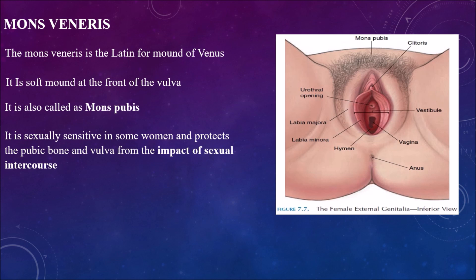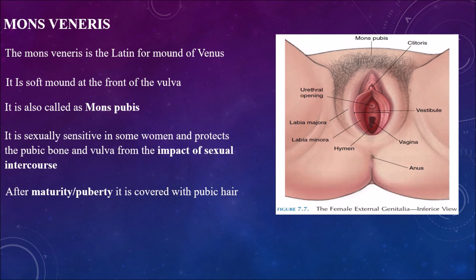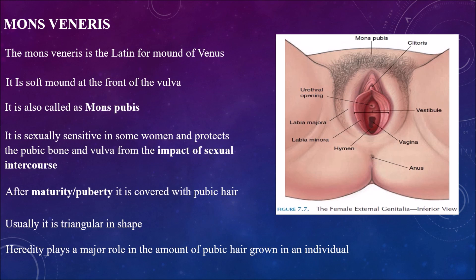The mons pubis is sexually sensitive in some women and protects the pubic bone and vulva from the impact of sexual intercourse. After puberty — around age 11 to 12 — it is covered with pubic hair. Its shape is mostly triangular. Heredity plays a major role in the amount of pubic hair grown, so it differs from individual to individual.